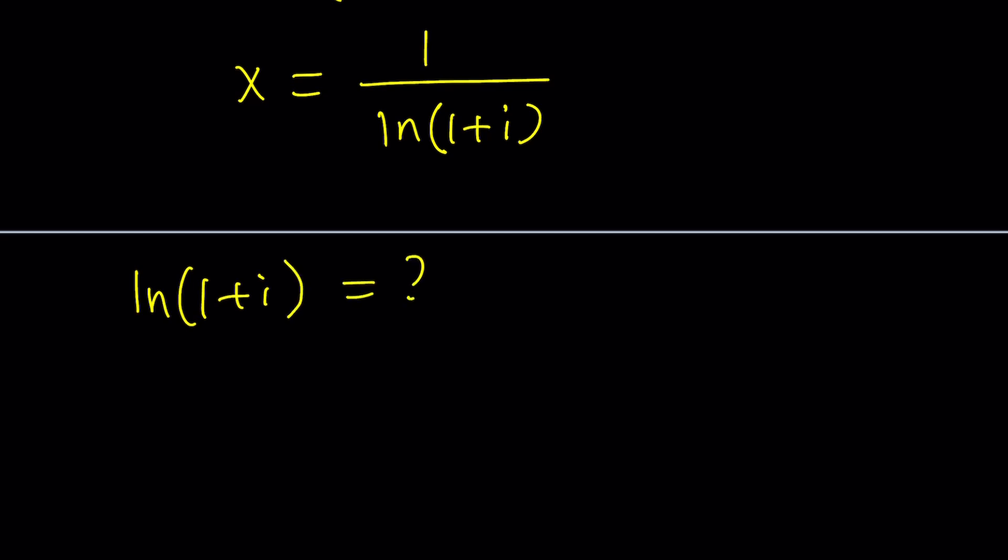To find ln(1+i), I'm going to write 1+i in polar form and use Euler's formula. Remember, a complex number z can be written as r·e^(iθ), where r is the modulus or absolute value of z, and θ is the argument or the angle. So 1+i on the coordinate system is going to be at (1,1). Therefore, it's going to make a 45-degree angle with the real axis. This is π/4 radians.